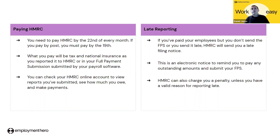If for any reason you report late — if you've paid your employees but don't send the FPS or send it late — HMRC will send you a late filing notice, which is an electronic notice to remind you to pay. HMRC can also charge you a penalty if you don't provide a valid reason for submitting late. When you submit your FPS late you can select the relevant reason for late submission.